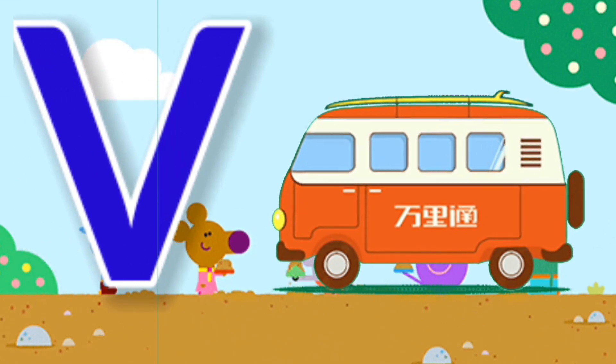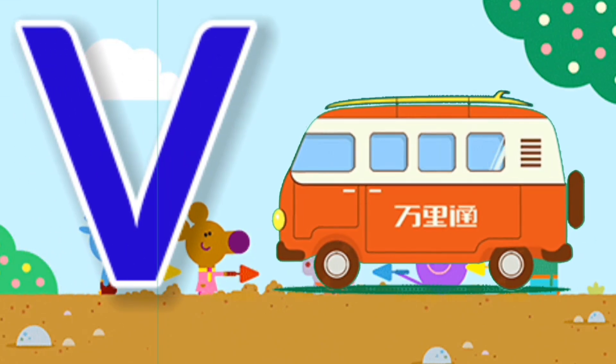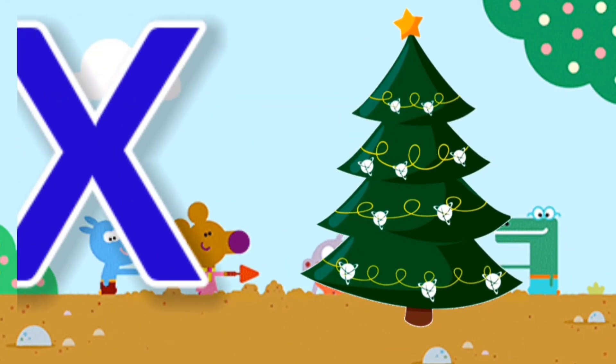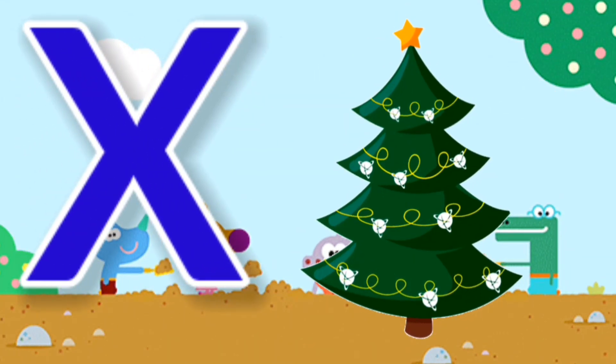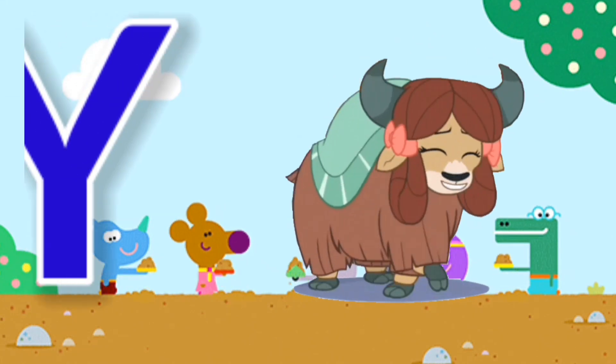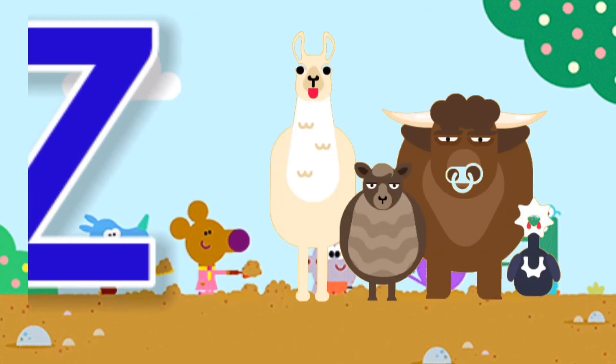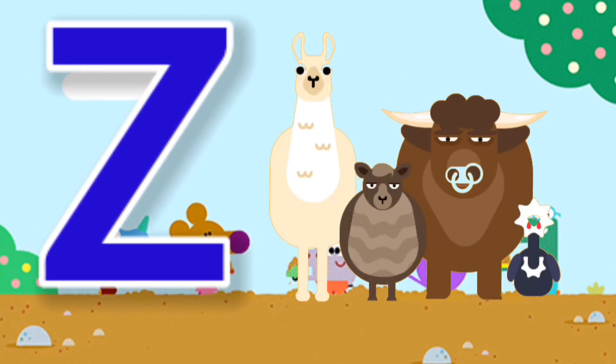U for umbrella, V for when, W for watch, X for Xmas, Y for egg, Z for zoo.